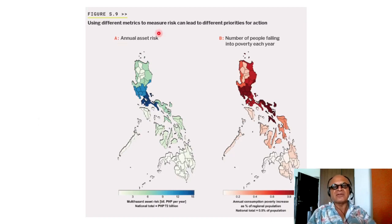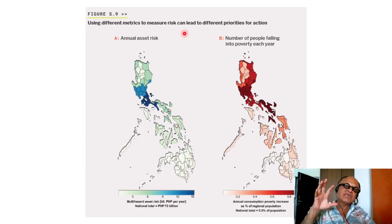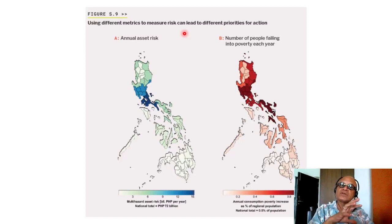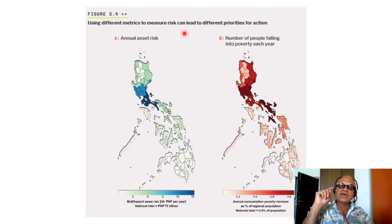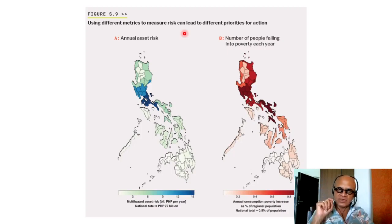Using different metrics to measure risk can lead to different priorities for action. In the IPCC AR6, the framework used in AR5 was risk as a multiplication of hazard, exposure, and vulnerability. In AR6, it's hazard, vulnerability, exposure, and response.